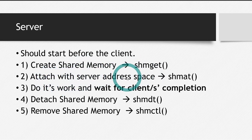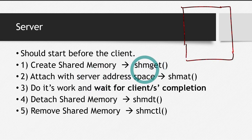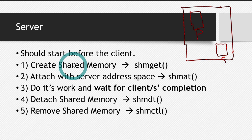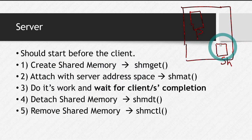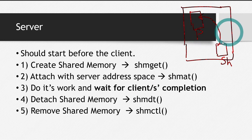The second step is attach that shared memory with the process's address space — the server address space. What actually happens in RAM is: when the first step is done, some memory is created in RAM somewhere. But this memory is still not attached with this process — it is created, but it's not attached. The second step actually attaches this shared memory with this process's address space. When the second step is executed, this memory is attached to the process. You can say a pointer is established, a connection is created.